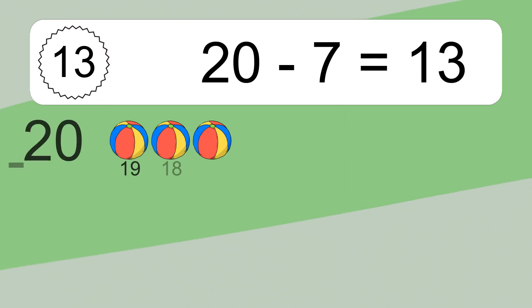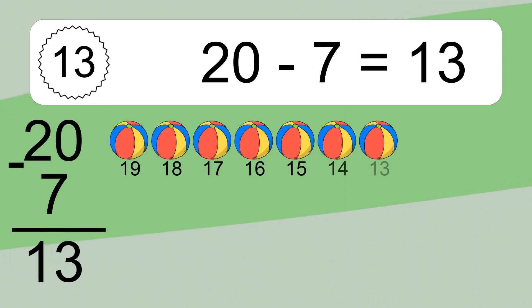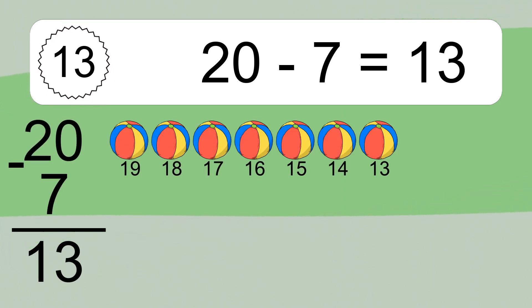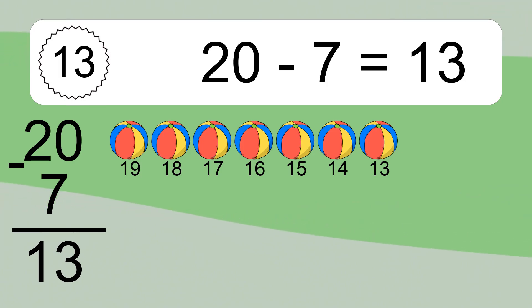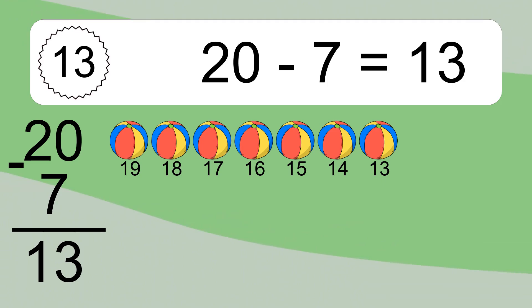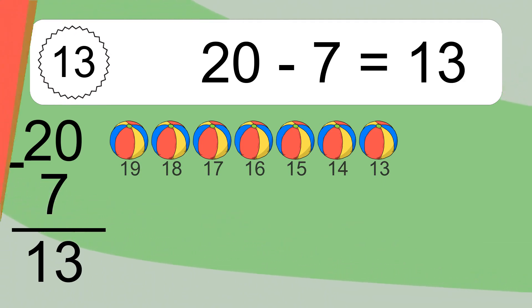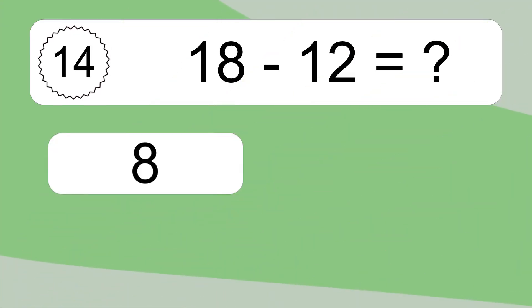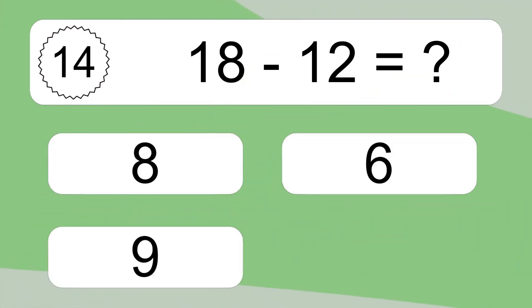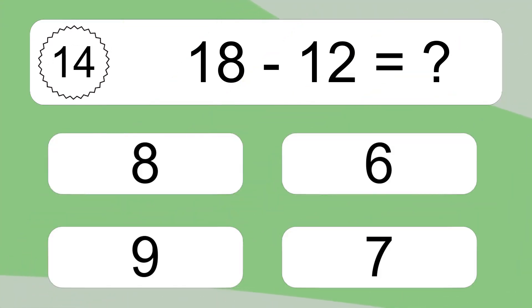20 minus 7 equals 13. Let's count it. 19, 18, 17, 16, 15, 14, 13.